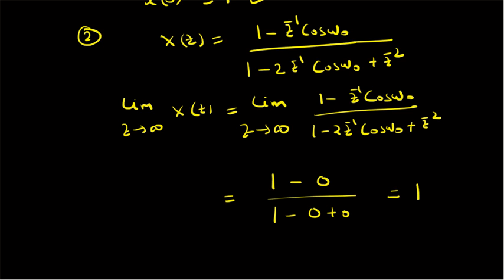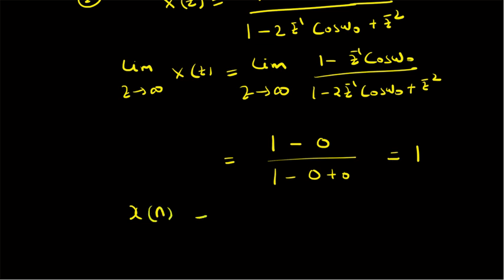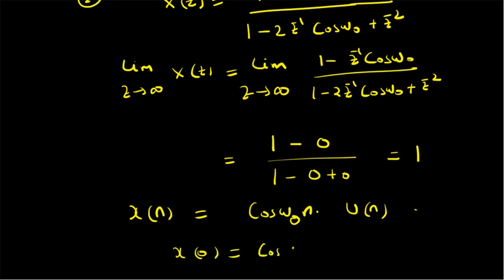If you recall, the corresponding time domain signal for X of Z — that is 1 minus Z inverse cos omega 0 divided by 1 minus 2 Z inverse cos omega 0 plus Z power minus 2 — the corresponding time domain signal X of N is given by cos(omega 0 N) multiplied by U of N. So when we put N equal to 0, X of 0 is basically cos(0) times U of 0, which is equal to 1. Hence again the initial value theorem is verified.